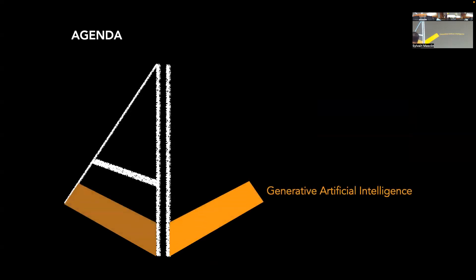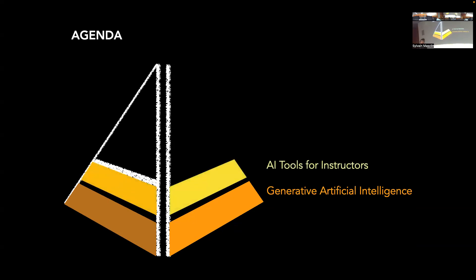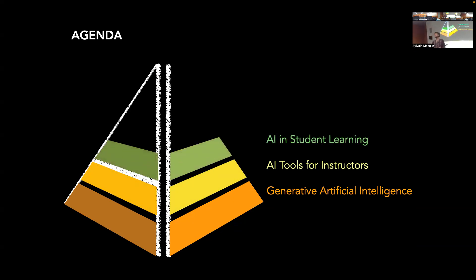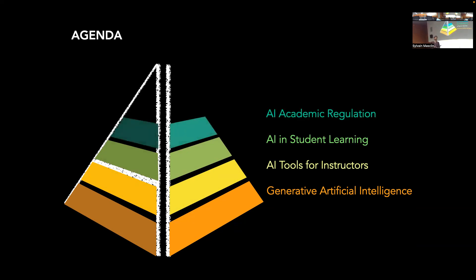Quickly, here's what I want to go over today: a quick introduction to generative artificial intelligence — because we talk a lot about it but are sometimes confused about what it means — then why it can be useful for instructors, how it can be applied for student learning, and how we should think about regulating it. That last point I'll leave open for discussion.